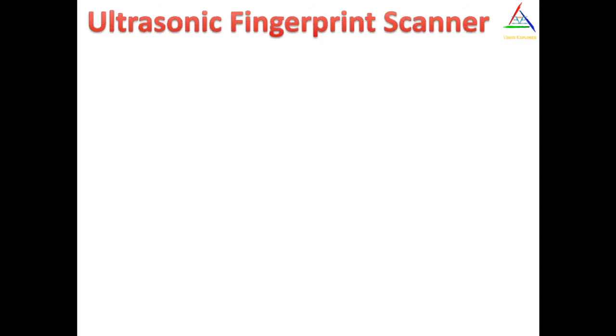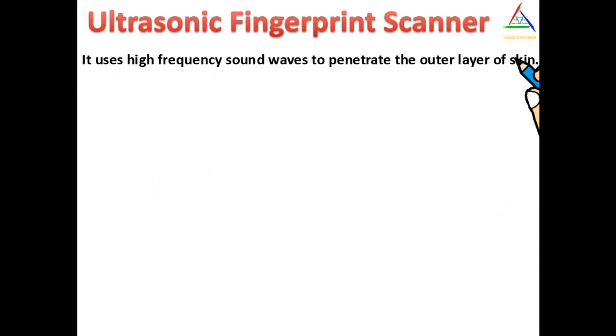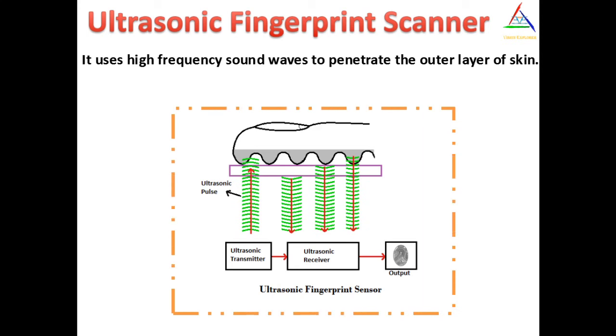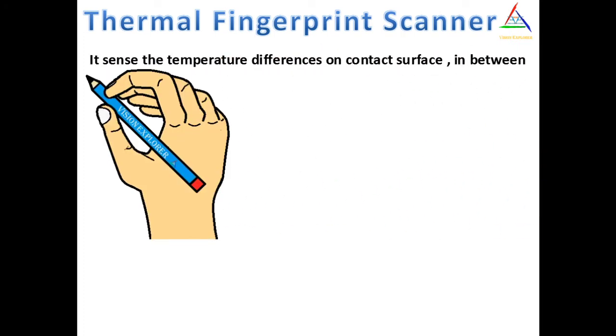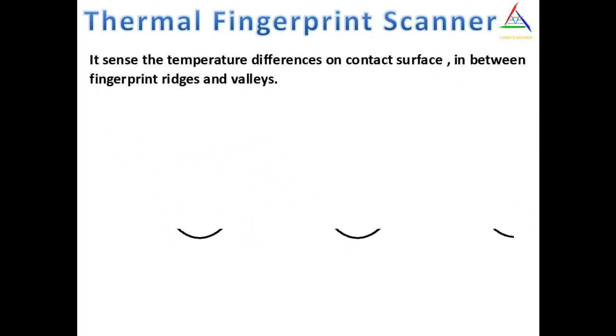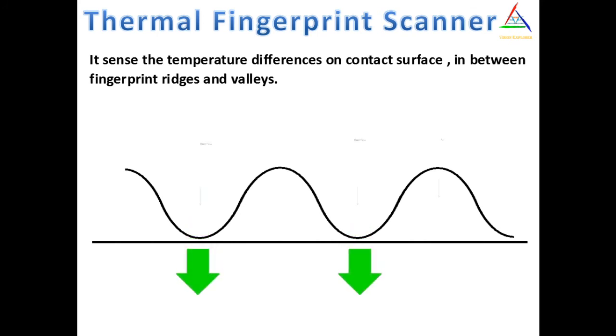The third type is the ultrasonic fingerprint scanner, which uses high frequency sound waves to penetrate the outer layer of skin. The last one is the thermal scanner. As the name suggests, it senses the temperature differences on the contact surface between fingerprint ridges and valleys.